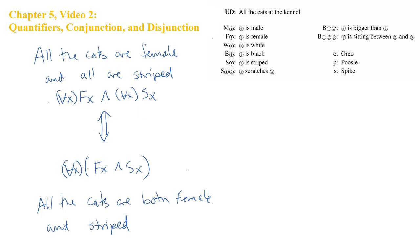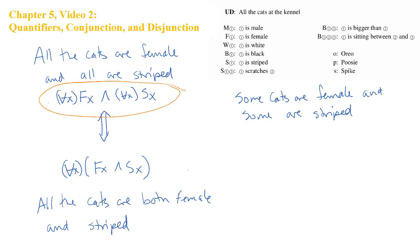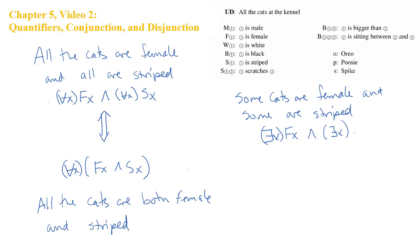Contrast that with this case. First we'll have: some cats are female and some are striped. That follows a syntactically similar pattern to the previous one, except with the existential quantifier. So we'll say existential x Fx — some are female — and another existential x Sx — some are striped.